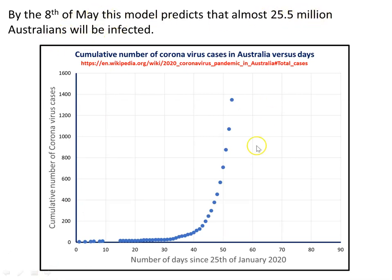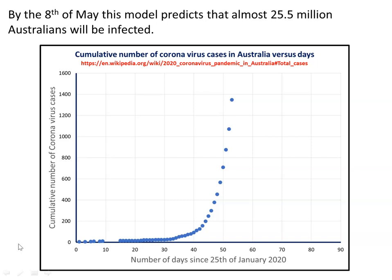By the 8th of May this model predicts almost 25.5 million Australians will be infected. People must adhere to social distancing measures, and governments must act to increase ICU beds and slow the spread by closing all non-essential activities — as we've seen in China and elsewhere. Otherwise it'll be out of control. It's a matter of us acting and cooperating together: adhering to social distancing, hygiene rules, and the government shutting down non-essential activities like schools and universities.